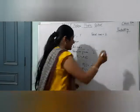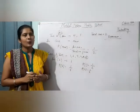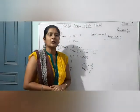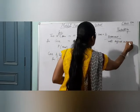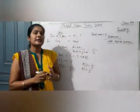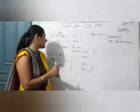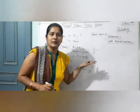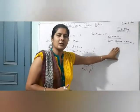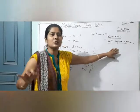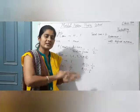इसके बाद हम चलते हैं कुछ अपने terms पर. 1st term is Experiment. Experiment क्या होता है? An operation which gives some well-defined outcomes is known as Experiment. मतलब इसका result पहले ही पता होना चाहिए कि अगर हम यह experiment करेंगे तो इन्हीं में से कोई option आएगा. For example, dice का case — मुझे पहले ही पता है कि यही 6 cases आएंगे. In these 6 में से कुछ आएगा — well defined होते हैं, उन्हीं में से कुछ आएगा.